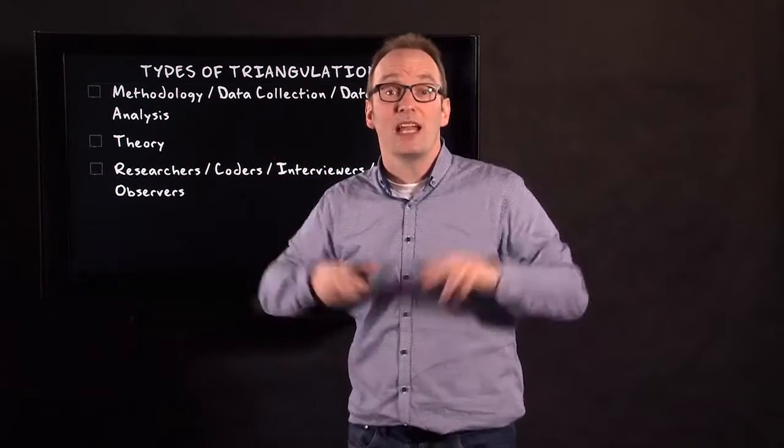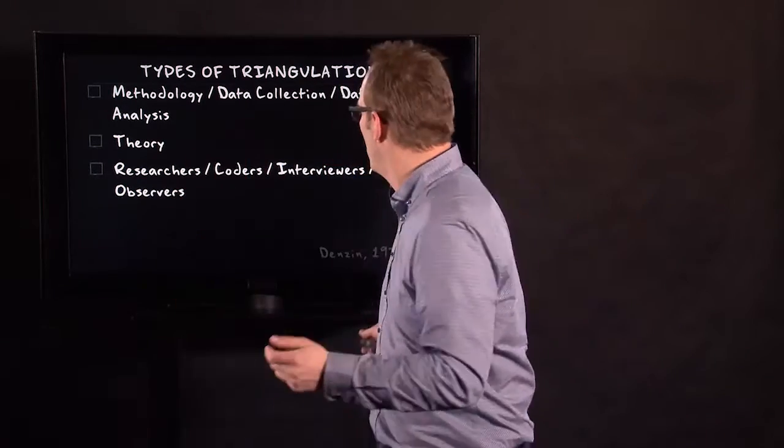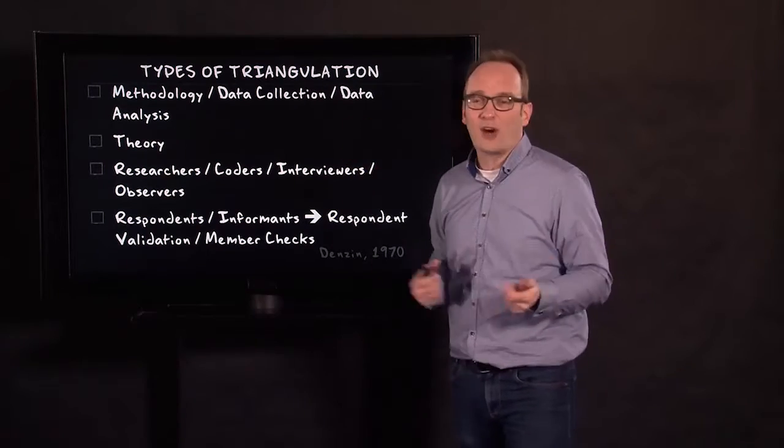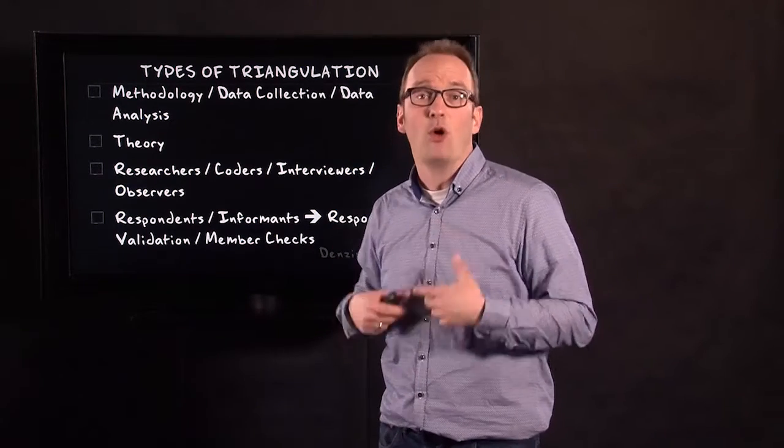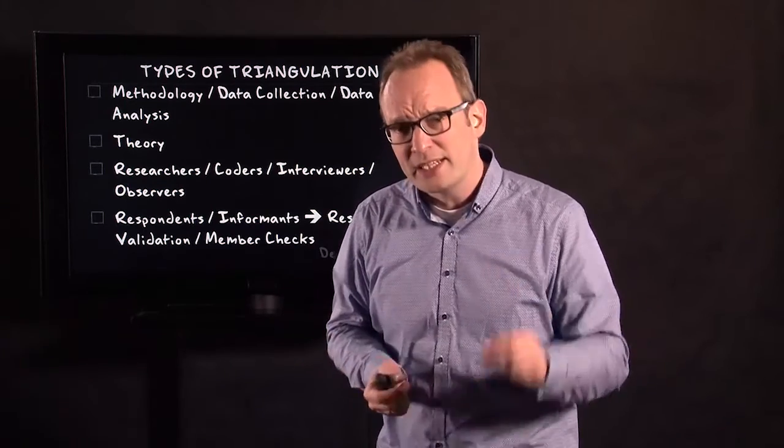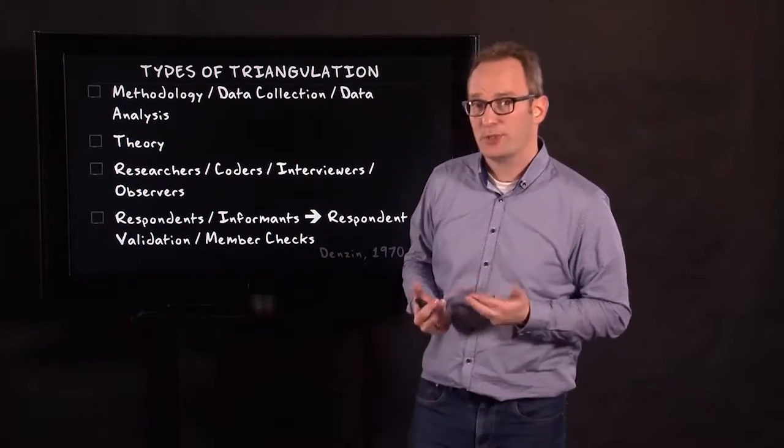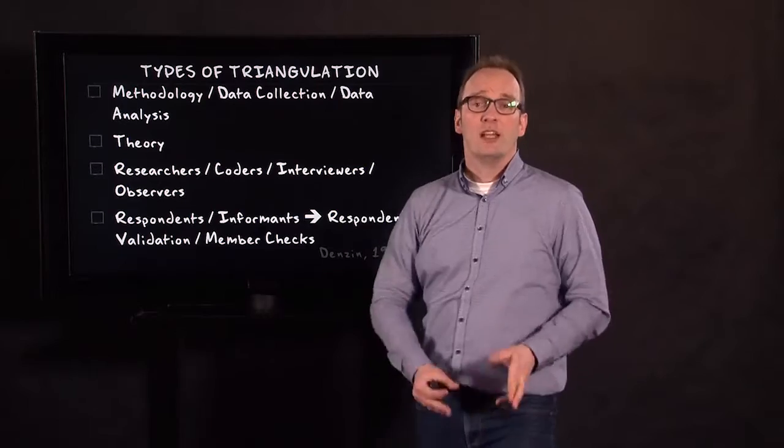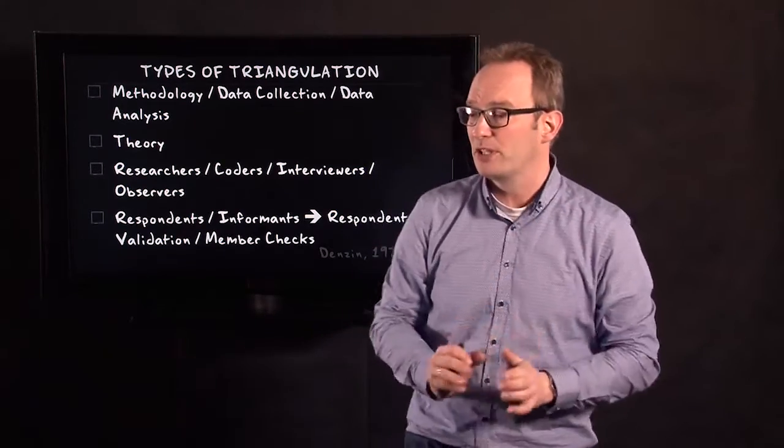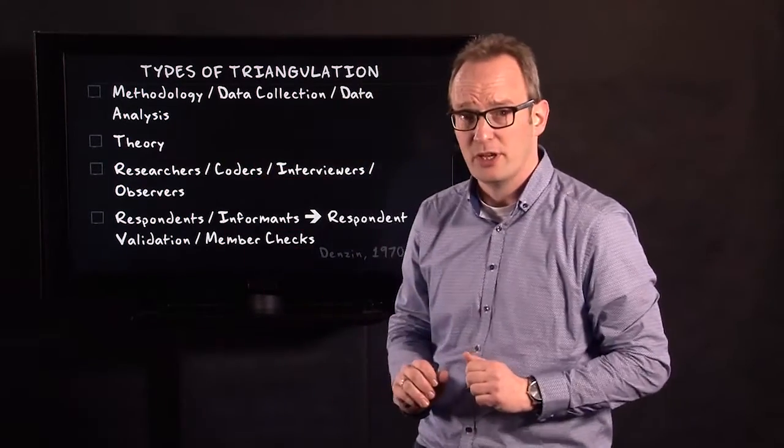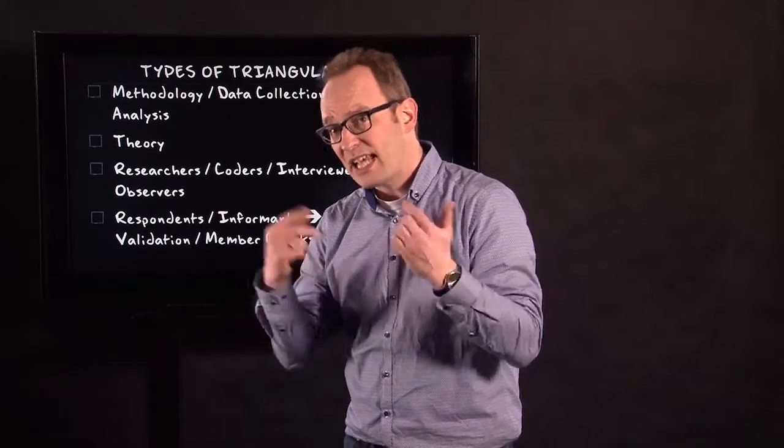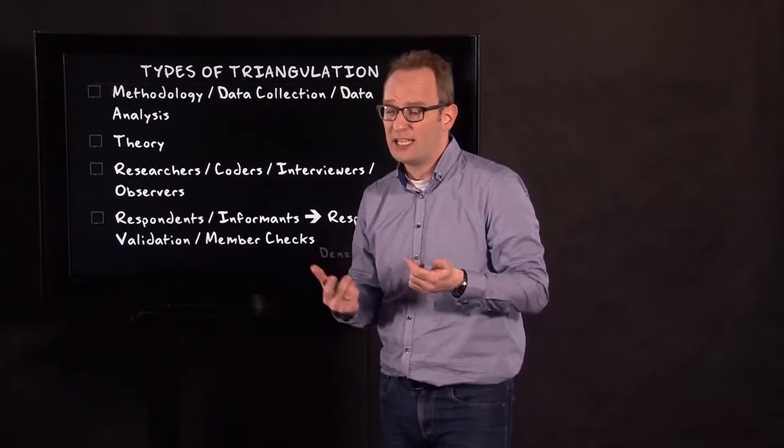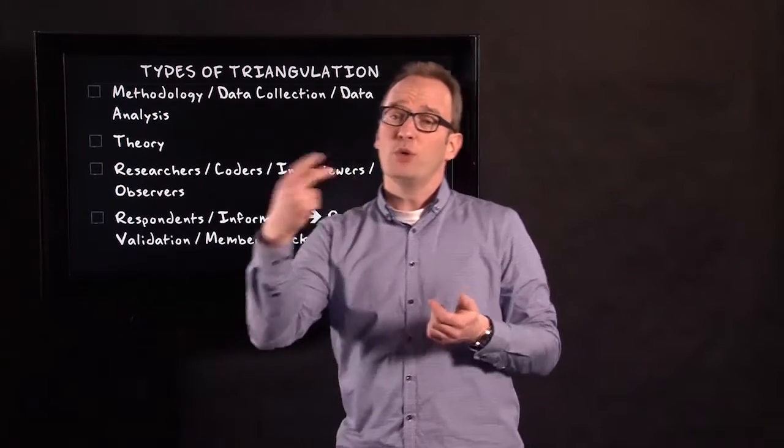Now, if we put them together, we can triangulate. The fourth form of triangulation is triangulation by respondents or informants. And there are two sub-types of it. The first one is to check with a first respondent and then go to a second respondent, or a first informant and then to a second informant.